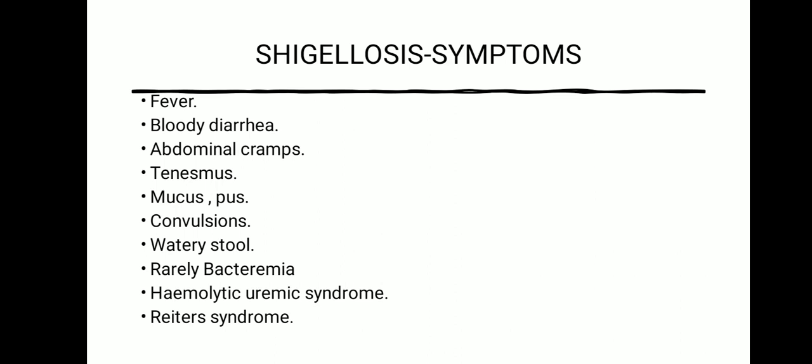Watery stool, and rarely, bacteremia — that is the spreading or entry of this organism into the bloodstream. Then hemolytic uremic syndrome, HUS, which is a blood disorder characterized by low RBC, acute kidney failure and low platelets; symptoms are bloody diarrhea, fever, vomiting and weakness. Then Reiter's syndrome, which is characterized by joint pain and swelling triggered by an infection in another part of the body.